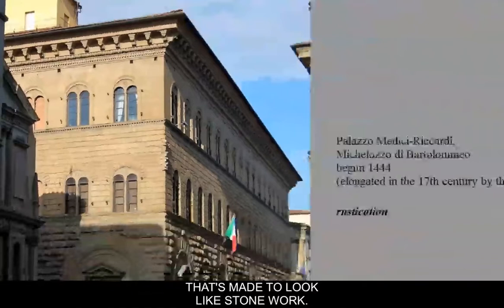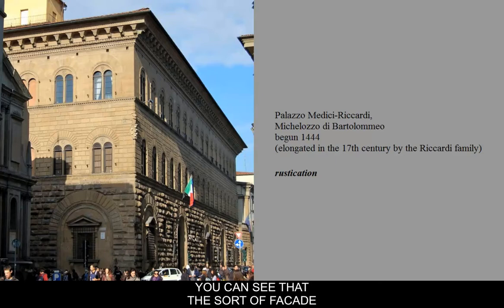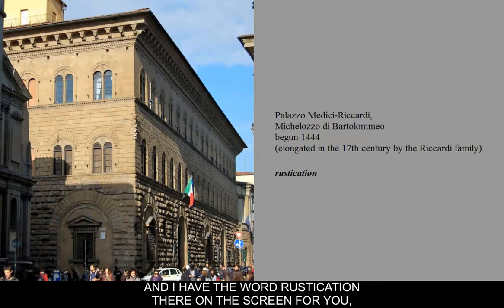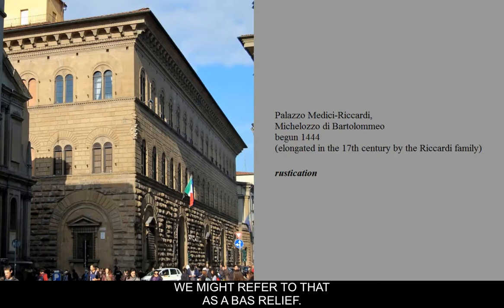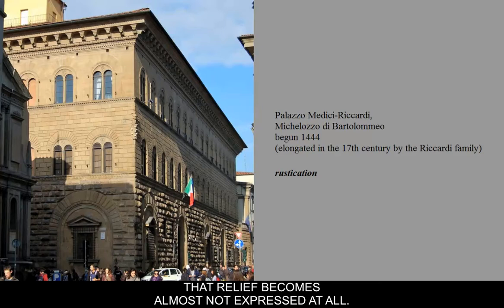If you look at the bottom course of this building, you can see that the facade or stonework on it is rusticated — meaning that it's rustic, it's rough. Then as we move up the surface of the building, it's almost like a drawing that becomes fainter and fainter. Near the second tier of the building, the rustication becomes less expressed and more like a lower relief — we might refer to that as bas relief. On the bottom it's haut relief and higher rustication, and as you move to the very top of the building, that relief becomes almost not expressed at all. It's almost just like a drawing in the cement of the classical orders.